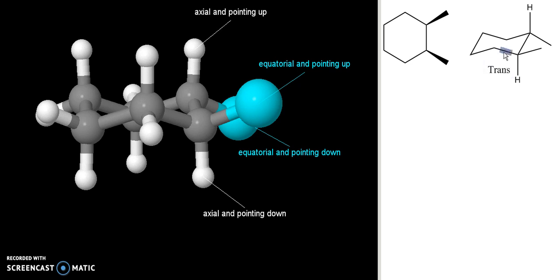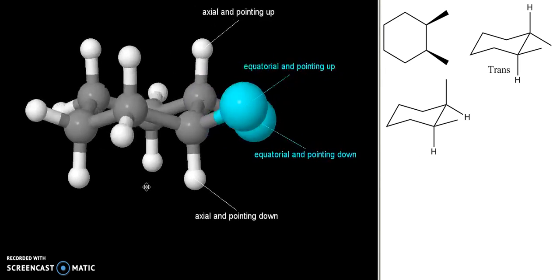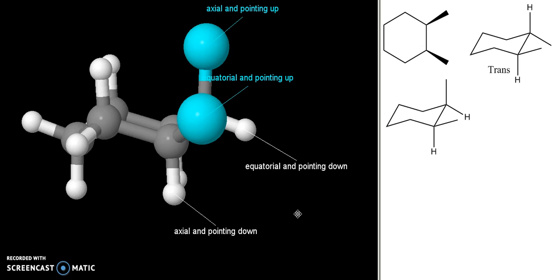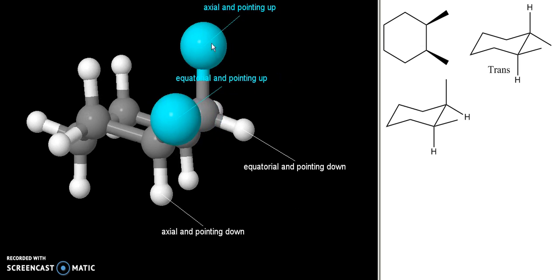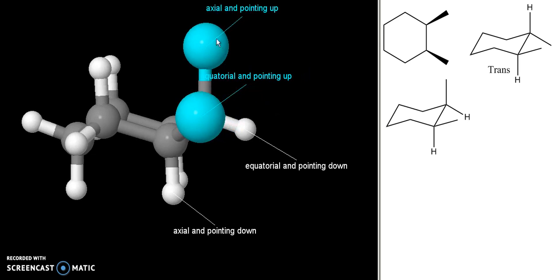The actual correct chair form of this compound is this with this methyl group pointing up, this methyl group is also pointing up. If I draw the correct form in the 3D model, I would have to move this methyl to here so that it looks like this with one group pointing up, my methyl group here up, this methyl group also pointing up. One is axial, one is equatorial.